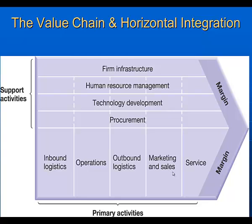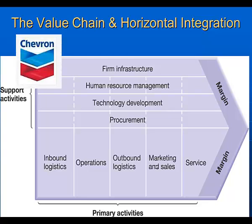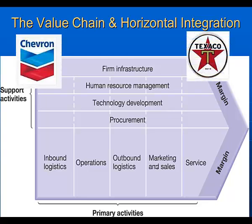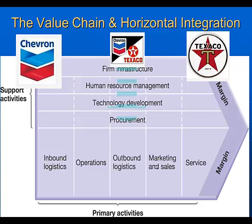The final form of integration is horizontal integration, and there's no better place to look than the 2001 merger between Chevron and Texaco — that merged company is now ChevronTexaco. This adds greatly to streamlining the value chain, in that it reduces two value chains — one owned by Chevron, one owned by Texaco — into one. What you have is a combined, streamlined, single value chain with economies of scale and hence greater margins for the merged firm.